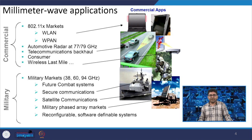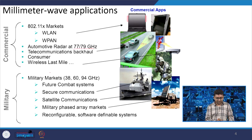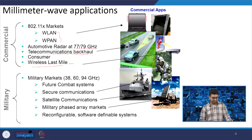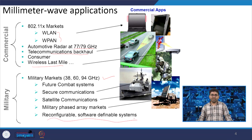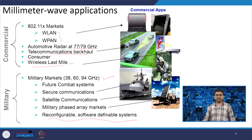Millimeter wave has wide applications in both commercial and military domains. In commercial use: automotive radar, telecommunication backhaul, wireless communication up to the last mile, and personal and local area networks. It can also be used at 38, 60, and 94 gigahertz for military communication in future combat systems, secure communication, satellite communication, and phased array markets. Various reconfigurable or software-defined systems can be used for military applications in this frequency range.